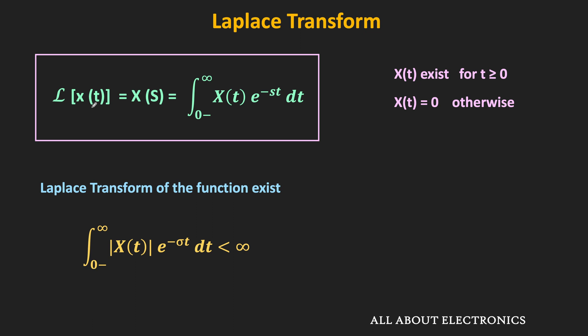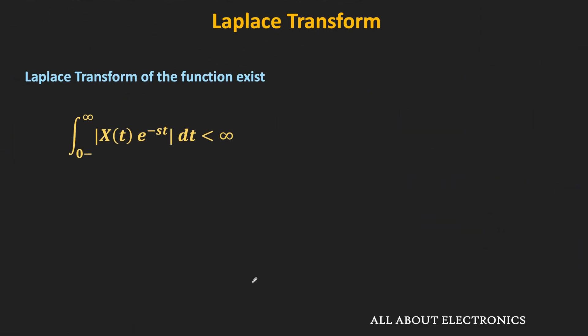The Laplace transform of a function exists if it satisfies the following condition: the integration of |x(t)| times e to the power minus σt dt from 0⁻ to infinity should be less than infinity. That means for a function to be Laplace transformable, its integration should converge — in other words, its integration should be less than infinity.